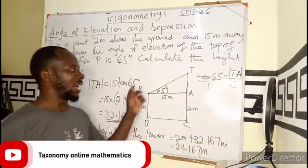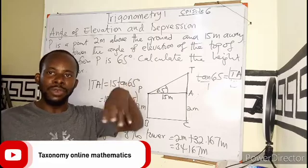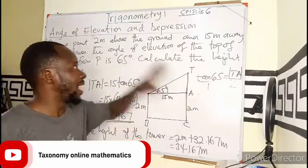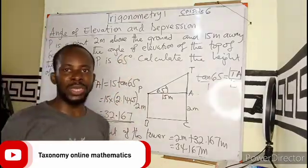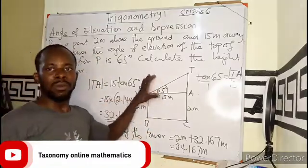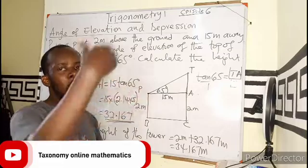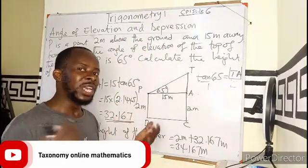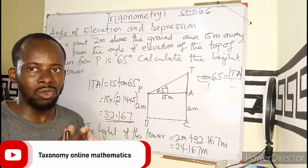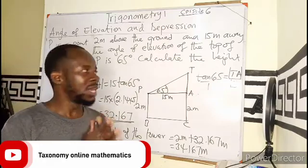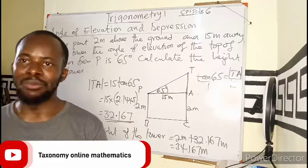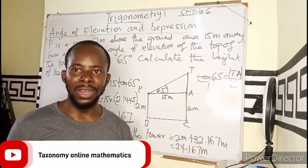So angle of elevation is just applying the concepts of trigonometry ratios based on a right angle triangle. If you are able to draw a diagram, every question under angle of elevation and depression — a diagram must be drawn, because there is a mark going to be awarded for a diagram. The moment the diagram is drawn perfectly, all that is left is the principles of trig and a little geometry or arithmetic, then you are good to go. I believe you have gotten the concept. I will take a question on angle of depression in the next video. Thank you for watching Tazunomi Online Mathematics. I remain Daku Fred Yao. See you in the next episode. Bye bye.